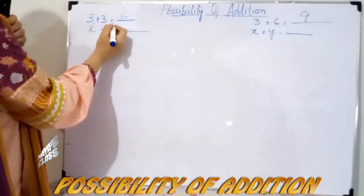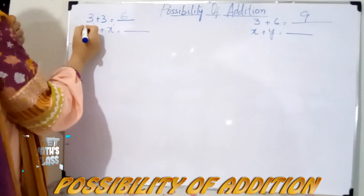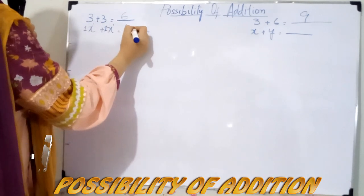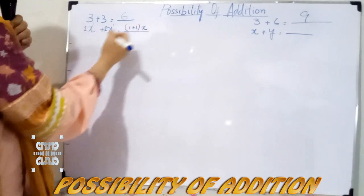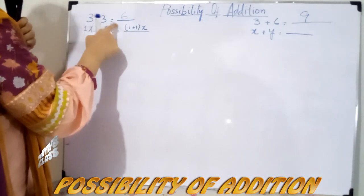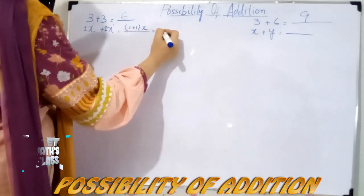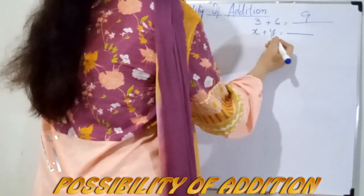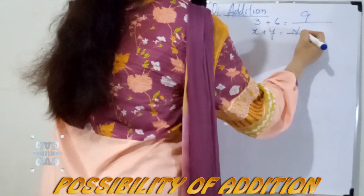Their powers are also the same, so simply add their coefficients. The coefficient is 1 here, so 1 plus 1, and the variable part will remain the same. When the variables are the same and their powers are also the same, simply add their coefficients. The result is 2x. Addition between different variables — because the variables are different, addition is not possible at all.